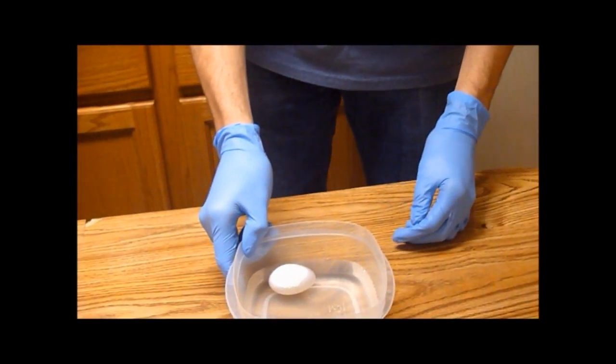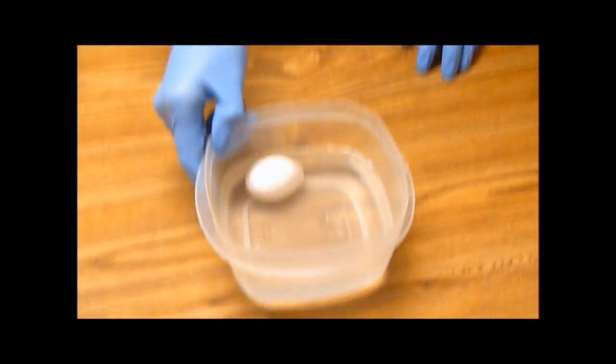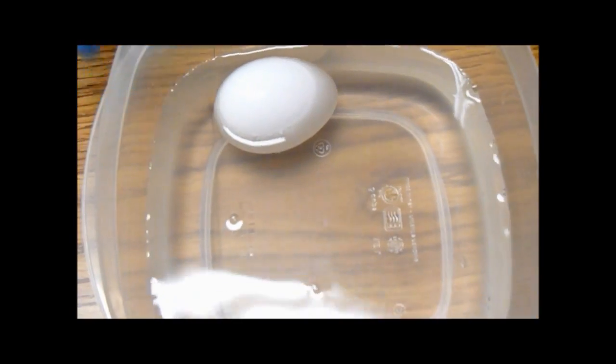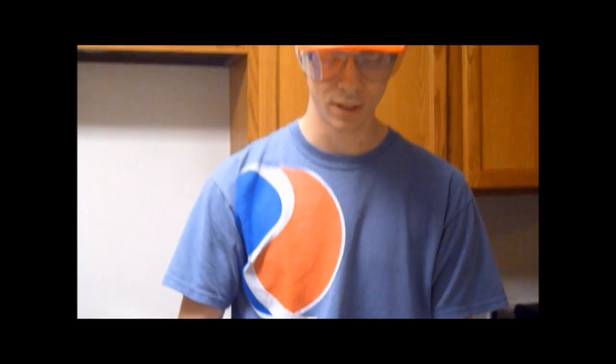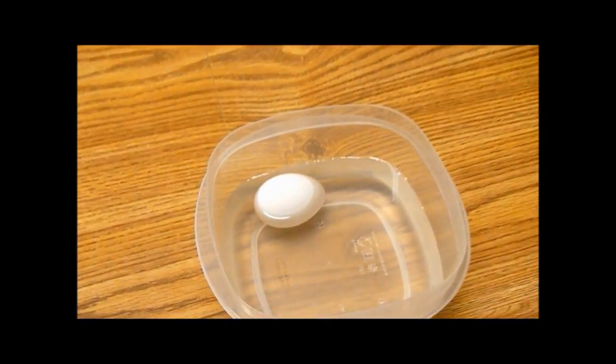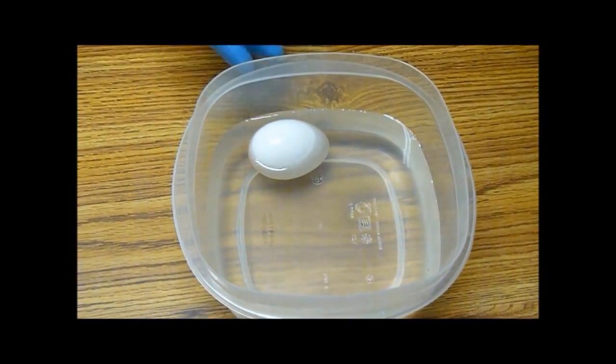You can already start to see some bubbles starting to form on the surface. This is because of the interaction with the acid, the vinegar, acetic acid, and the eggshell. The eggshell is mainly composed of calcium carbonate, which is a base.